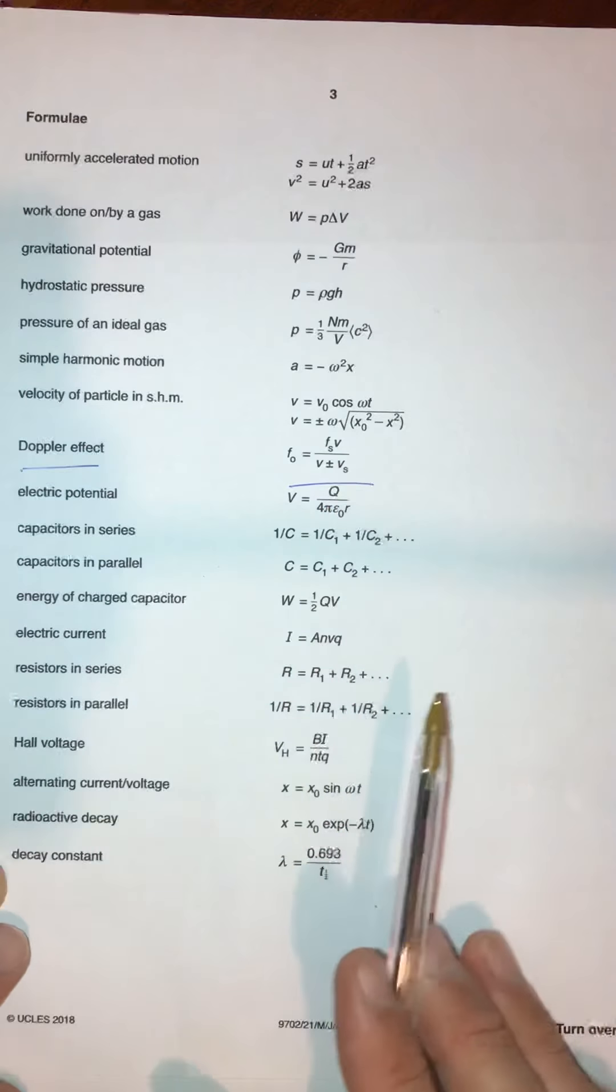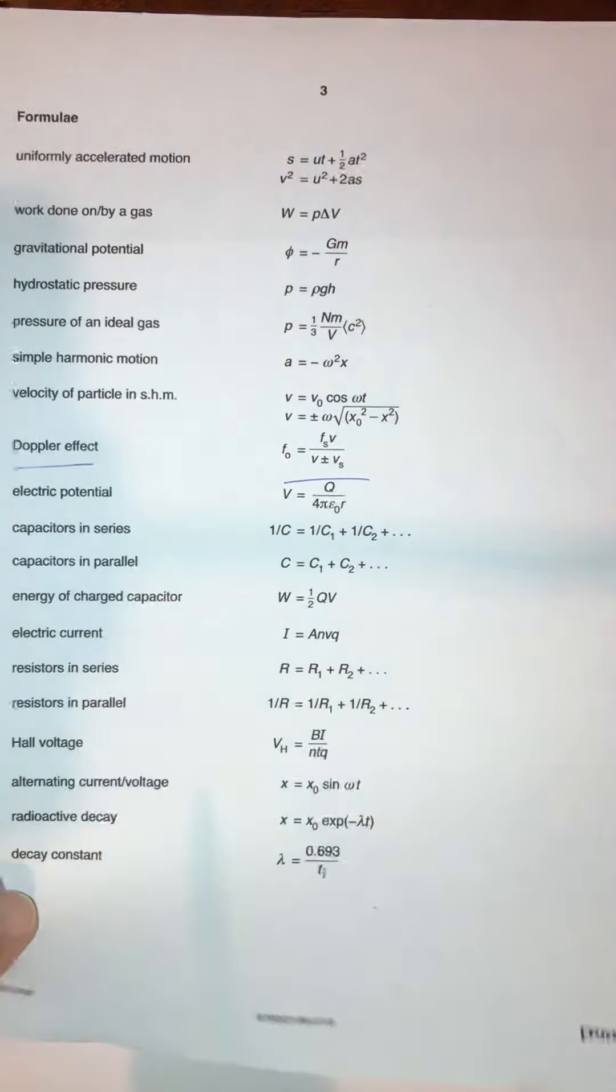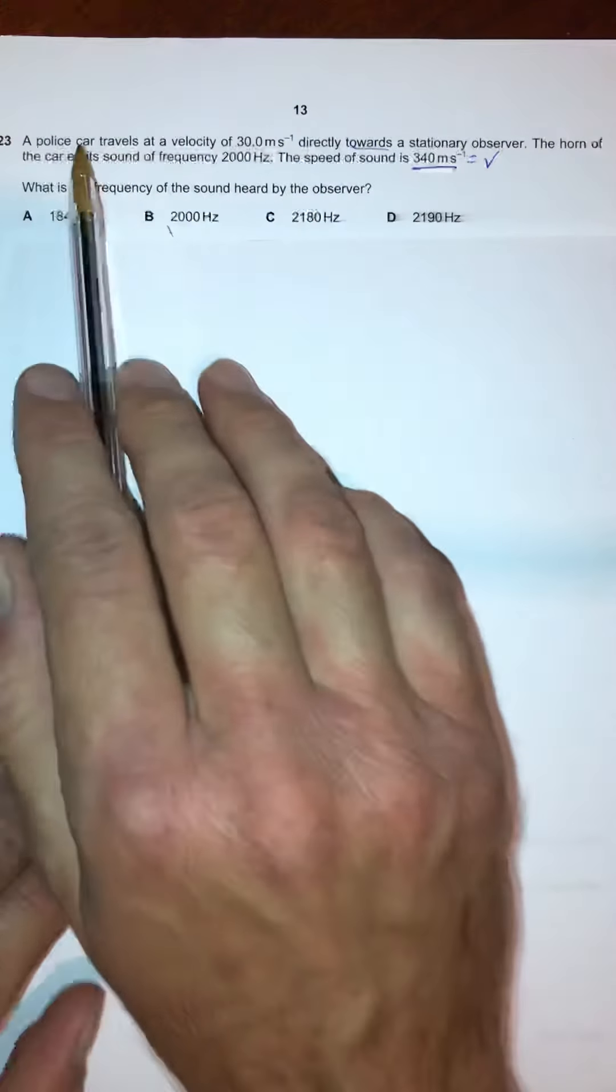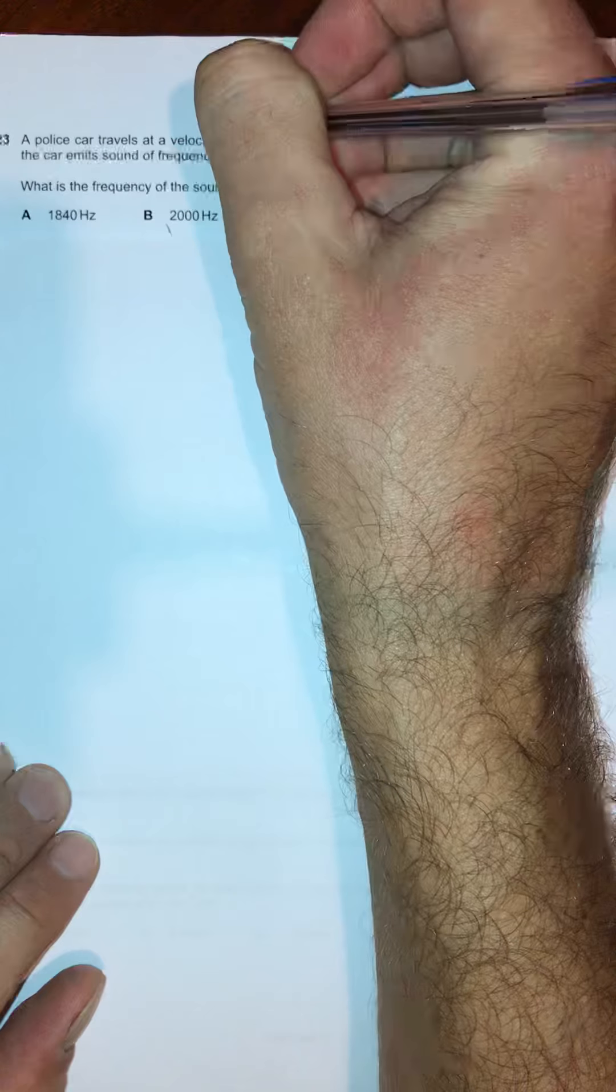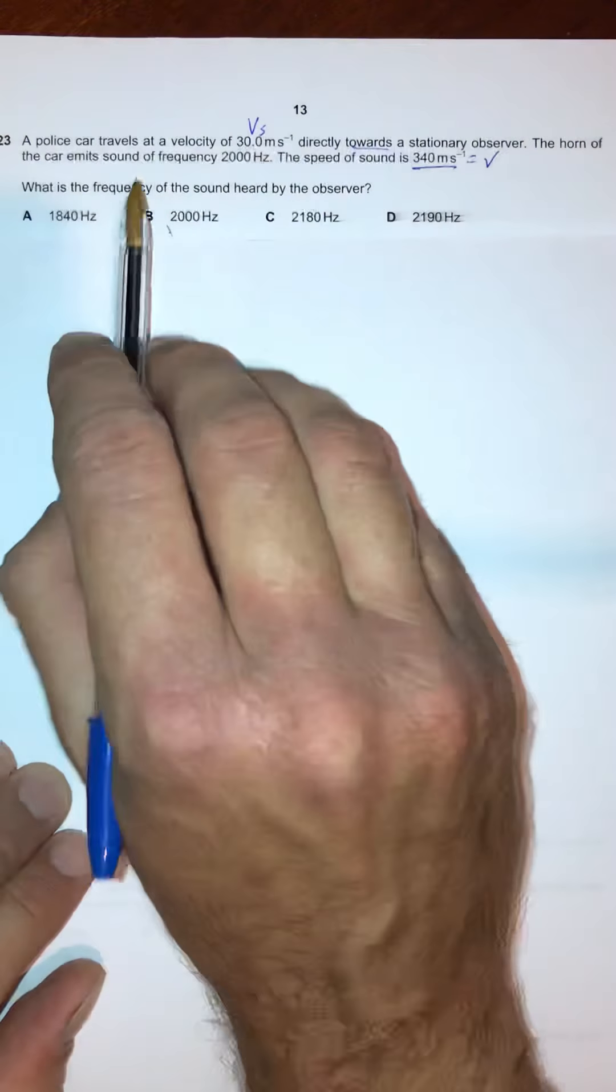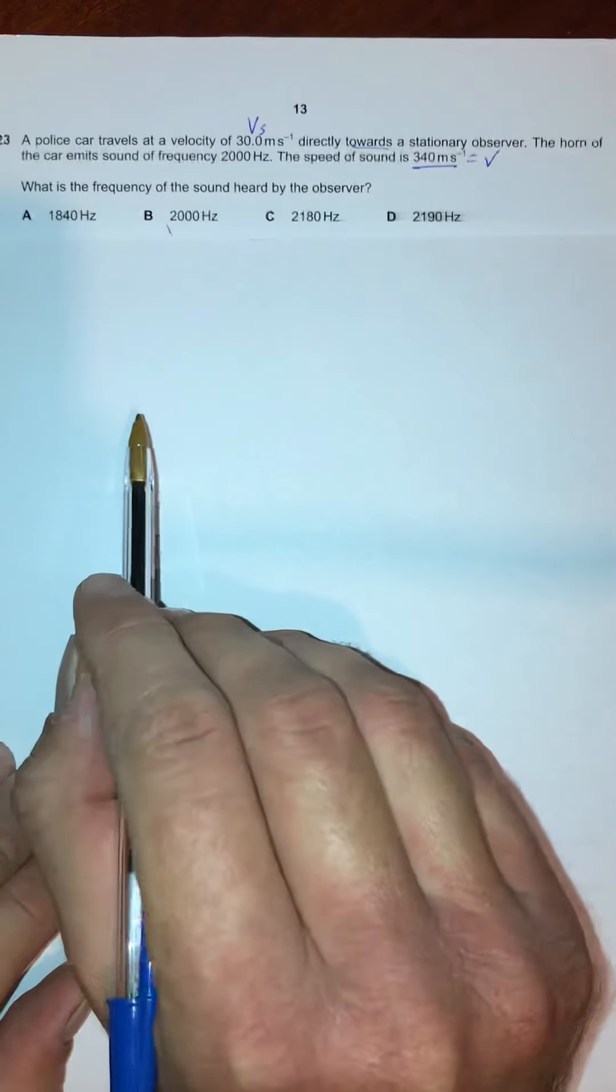So, in the question at hand here, we've got a police car traveling at a velocity of 30 meters per second. That's the velocity of the source. The source of the sound is moving itself at 30 meters per second.